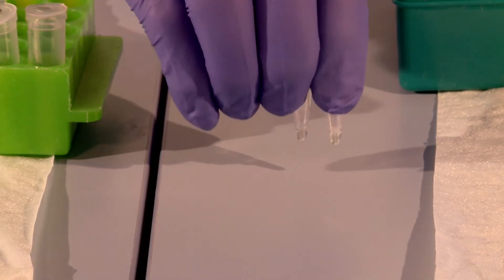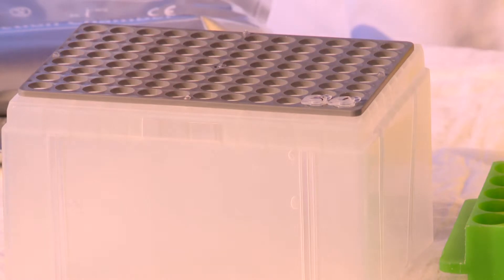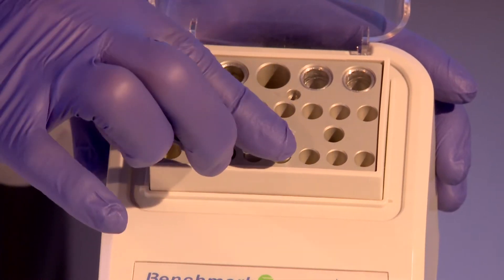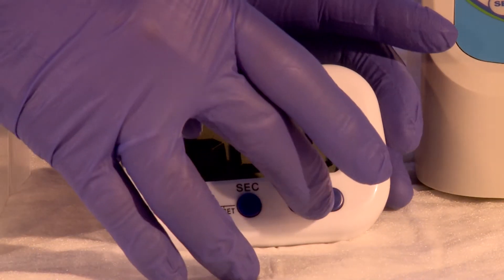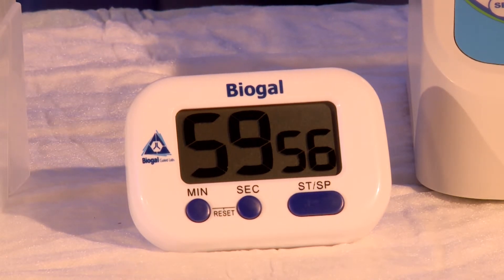Tap the tube on a surface to bring all the fluid to the bottom of the tube and incubate the mixture at room temperature for one minute. Place the reaction tube into the appropriate hole in the preheated block and incubate for one hour. Do not open the tube cover at any time during or at the end of the incubation period.